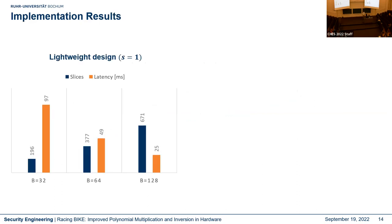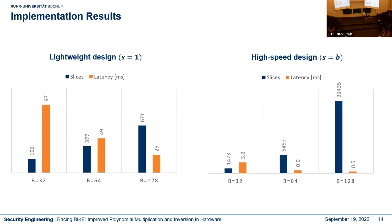We can adapt the implementation to the given environment. For a very lightweight design with s equal to 1 and b equal to 32, we can perform one inversion using roughly below 200 slices, though inversion takes around 100 milliseconds. For a high-speed design with s equal to b and b equal to 128, we spend over 21,000 slices but compute one inversion in 500 microseconds.